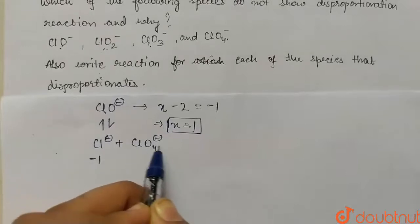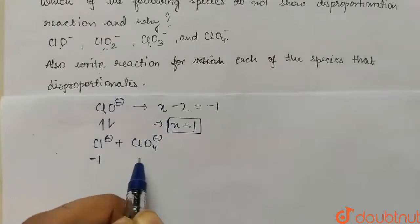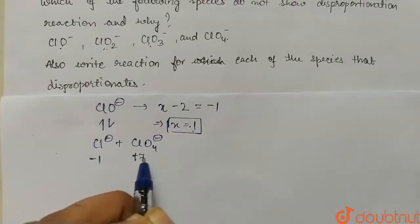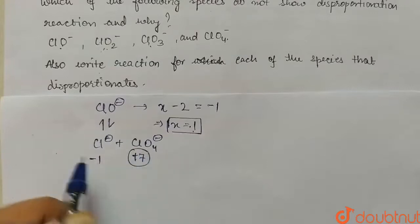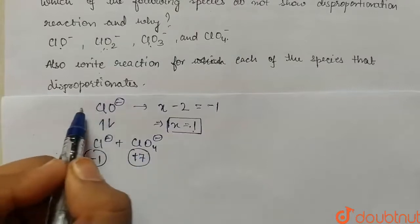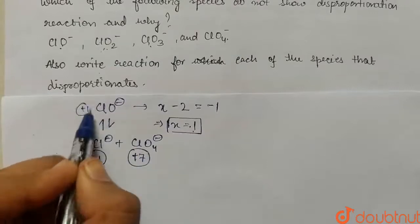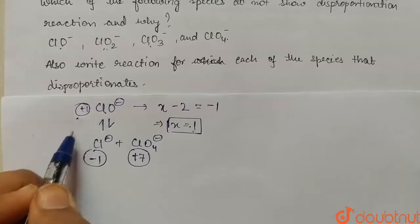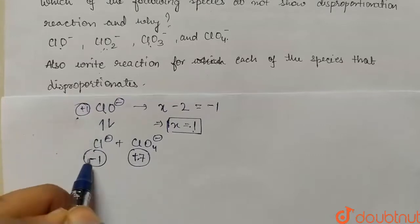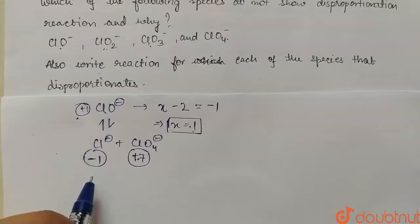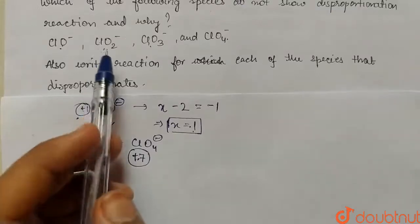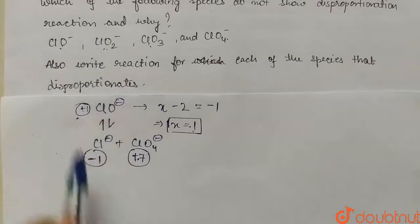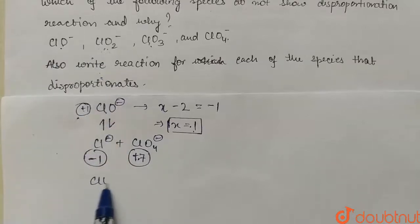In Cl⁻, chlorine is in oxidation state minus one, and in ClO₄⁻ it is in oxidation state plus seven. So the chlorine which is in plus one oxidation state on the reactant side is oxidizing to plus seven as well as reducing to minus one. This is a disproportionation reaction.